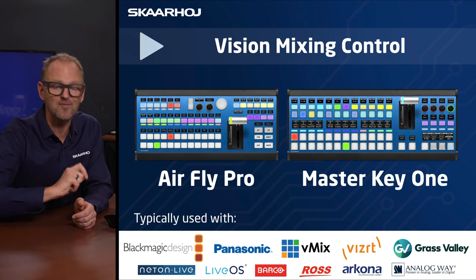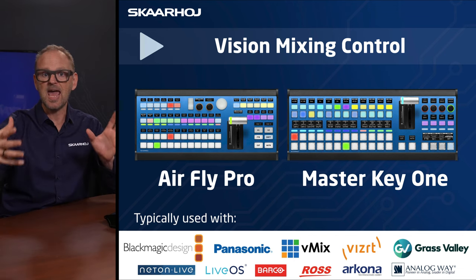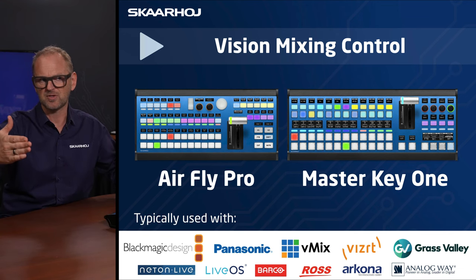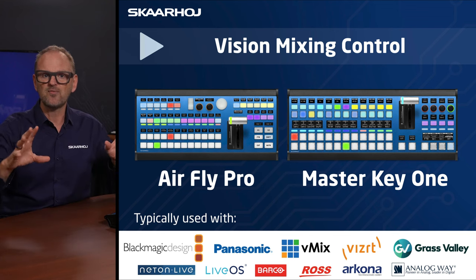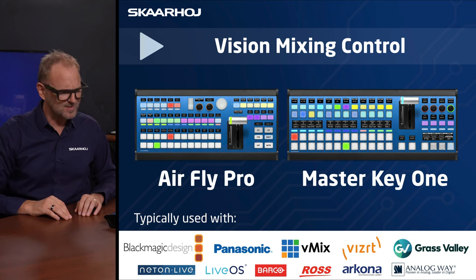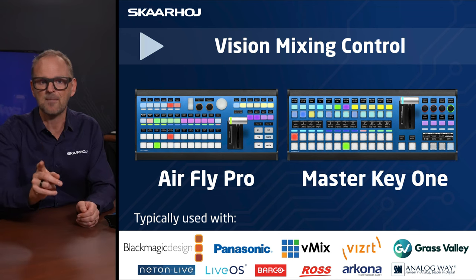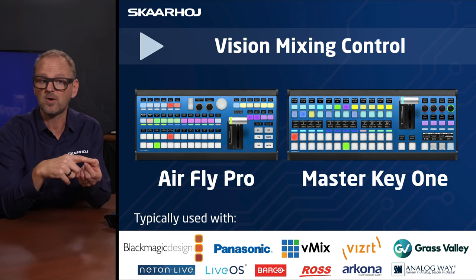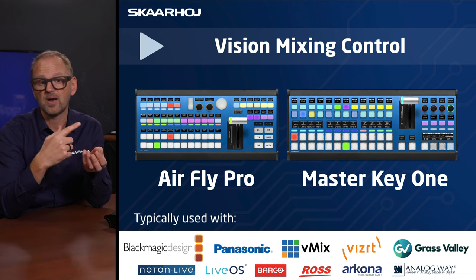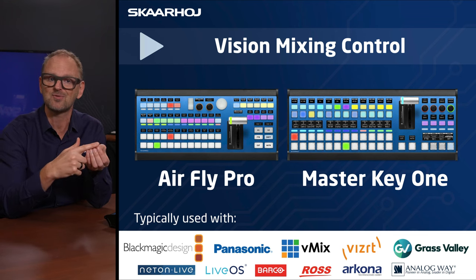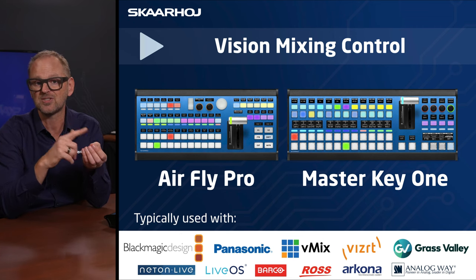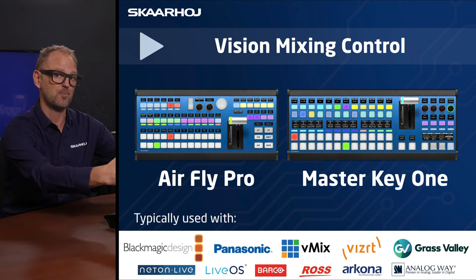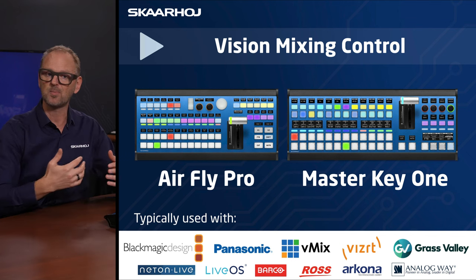We now have a big five with Grass Valley entering the scene with their AMP platform — an advanced media production cloud solution — where you'll find Maverick X vision mixer and mini mixers. We also support NetOnline, Barco presentation switchers using AirFly Pro, Ross Talk integration for Ross products, Acroma, and third-party integrations from AnalogWay. Notably, it can go both ways in our ecosystem: our panels support brands, and brands support our panels.